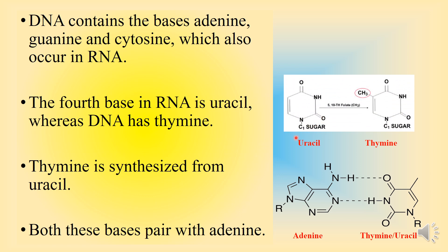Uracil is converted to thymine with the help of a methyl group donated by 5,10-tetrahydrofolate. Adenine forms two hydrogen bonds with thymine or with uracil.